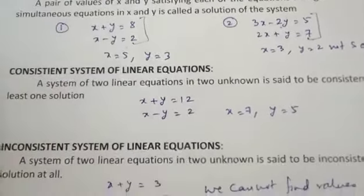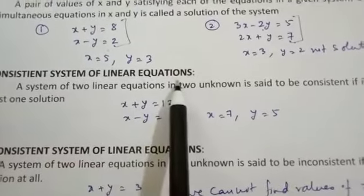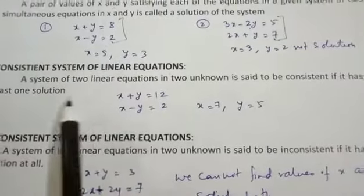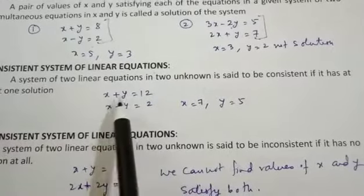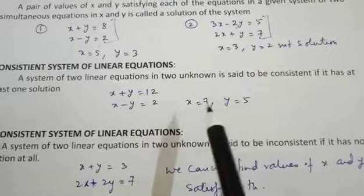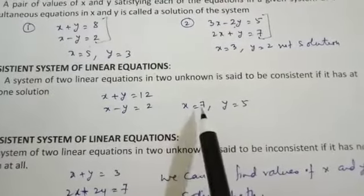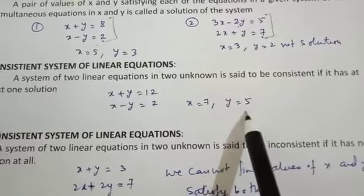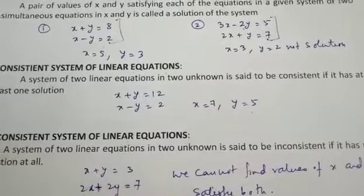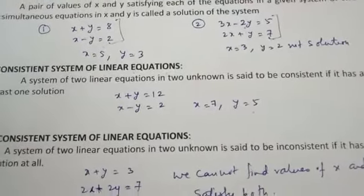Then we have the next word: consistent system of linear equations. A system of two linear equations in two unknowns is said to be consistent if it has at least one solution. For example, if I take x plus y equal to 12 and x minus y equal to 2, it will have a fixed solution x equal to 7 and y equal to 5. So these two pairs of equations are said to be a consistent system of linear equations.